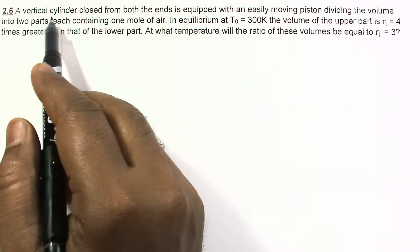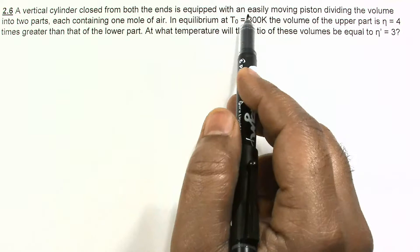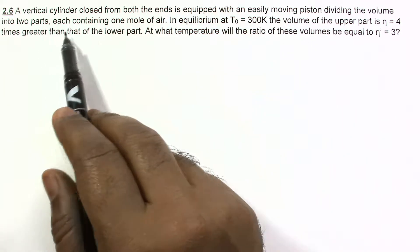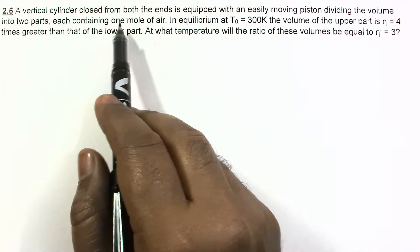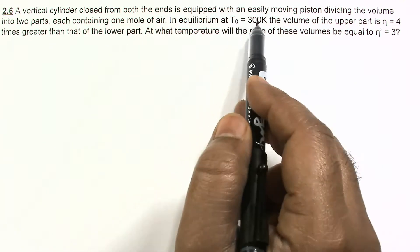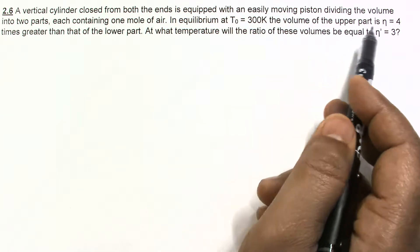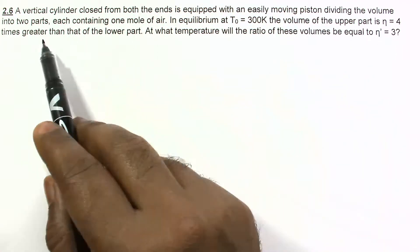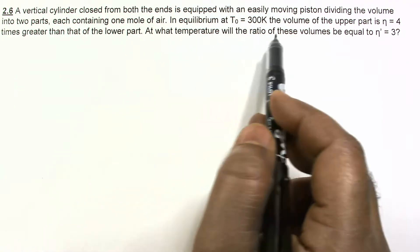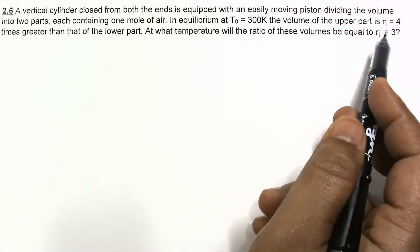In this question, a vertical cylinder closed from both ends is equipped with an easily moving piston, dividing the volume into two parts, each containing one mole of air. In equilibrium at T0 = 300K, the volume of the upper part is eta = 4 times greater than that of the lower part. At what temperature will the ratio of these volumes be equal to eta' = 3?